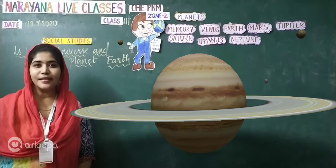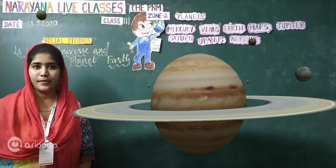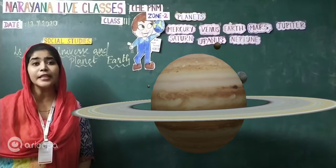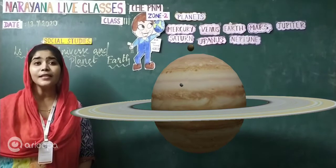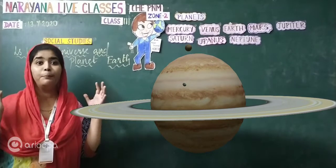Actually, Saturn is the sixth planet in the solar system, children. Which planet? Sixth planet in the solar system. And it is as large as Jupiter. So big.